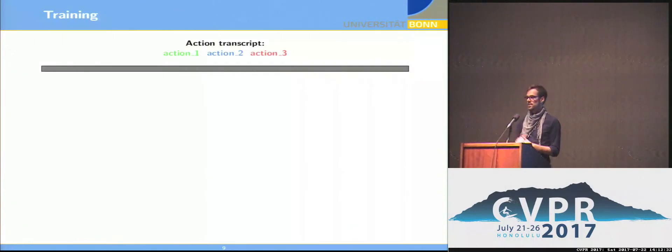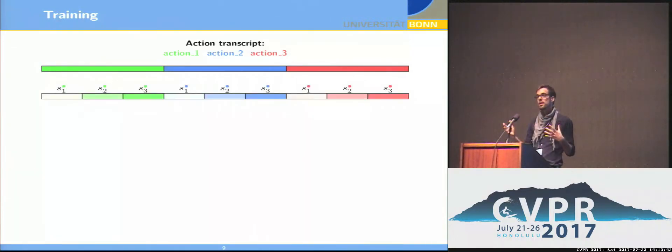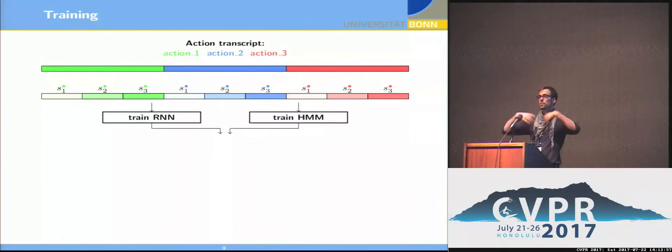Assume we are given a video and an action transcript like green class, blue class, red class. First thing we do is linearly subdivide these classes among the video frames and then we again linearly subdivide the sub-actions that we have among our previous subdivision. So now we have, for each frame, a sub-action class. So we can use this as ground truth to train the RNN and the hidden Markov model and once we train the model, we can use it to infer, according to this model now, the best labeling of sub-actions.